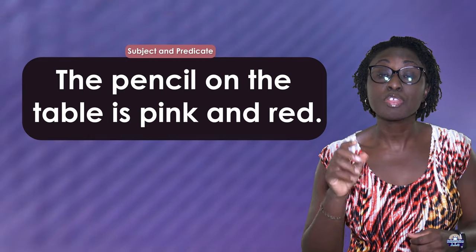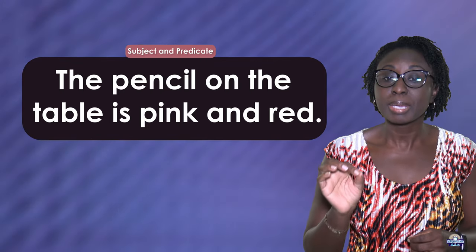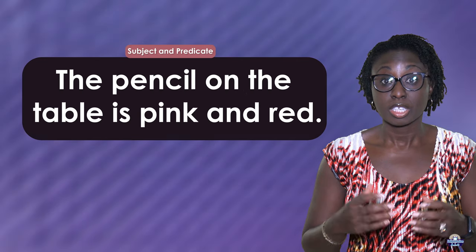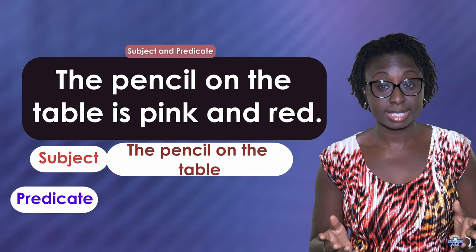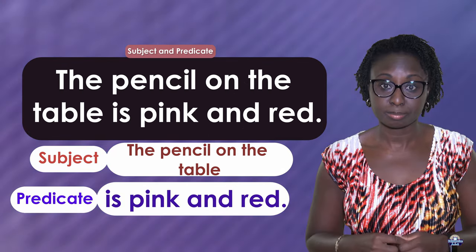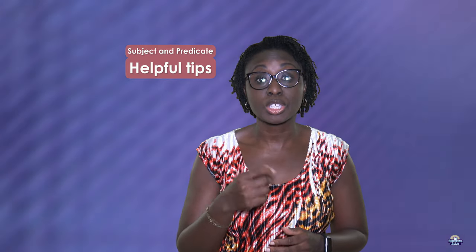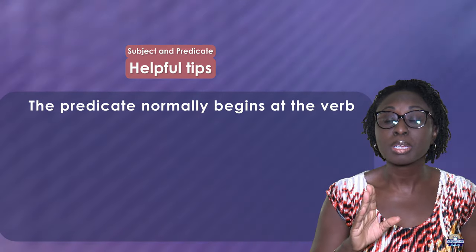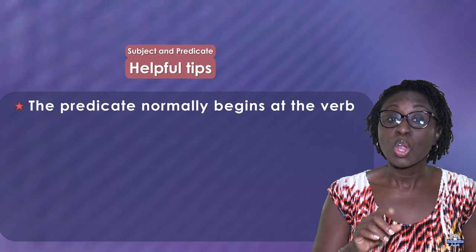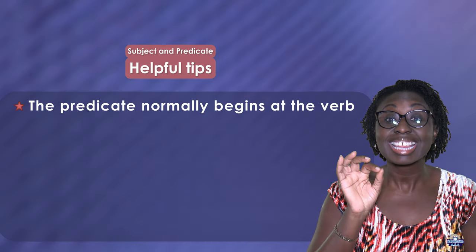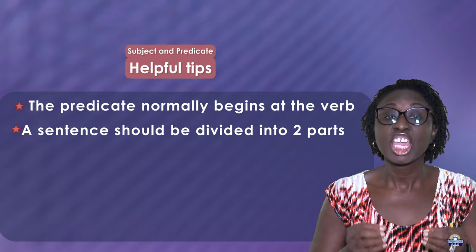'The pencil on the table is pink and red.' The subject is 'the pencil on the table.' The predicate is 'is pink and red.' Here are some very helpful tips: the predicate normally begins at the verb.